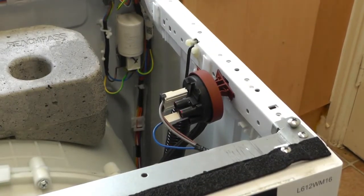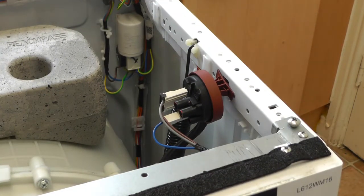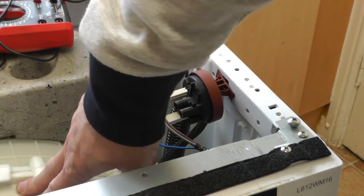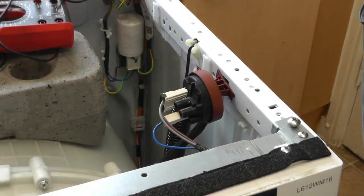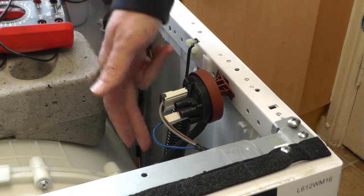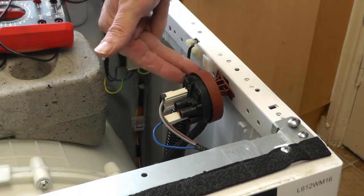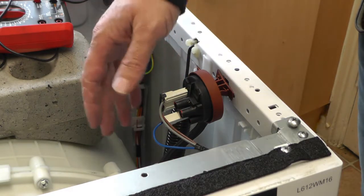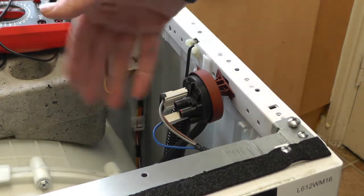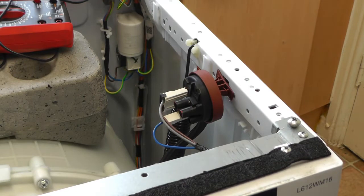So this little device is the pressure switch. Basically it connects to the tub of your washing machine and as your washing machine fills, obviously the air is forced out of it and it pushes up this tube. As soon as it reaches a certain pressure, it operates this which tells the circuit board to turn off the inlet for the water, stop it from flooding.